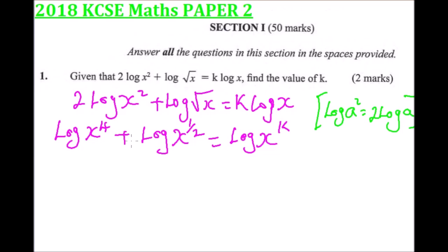We can write this as a single logarithm. The left-hand side, when we have plus, becomes log(x⁴ × x^(1/2)) = log x^k.